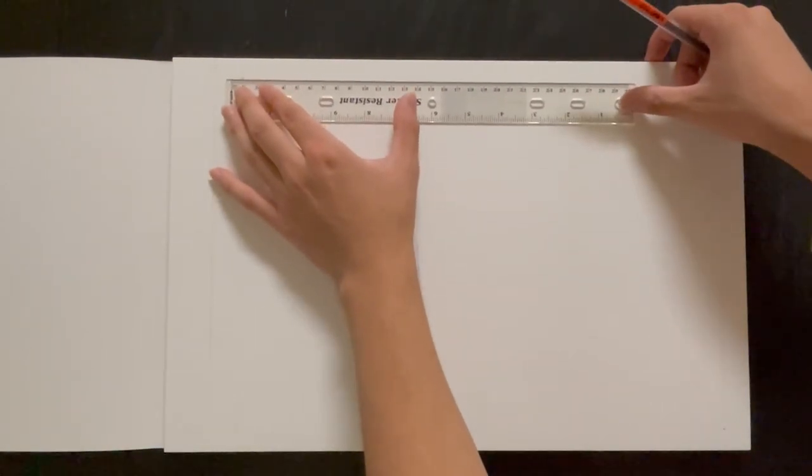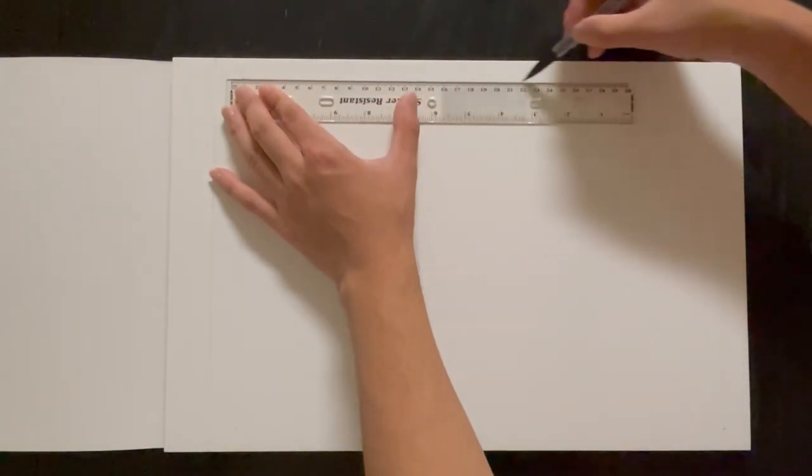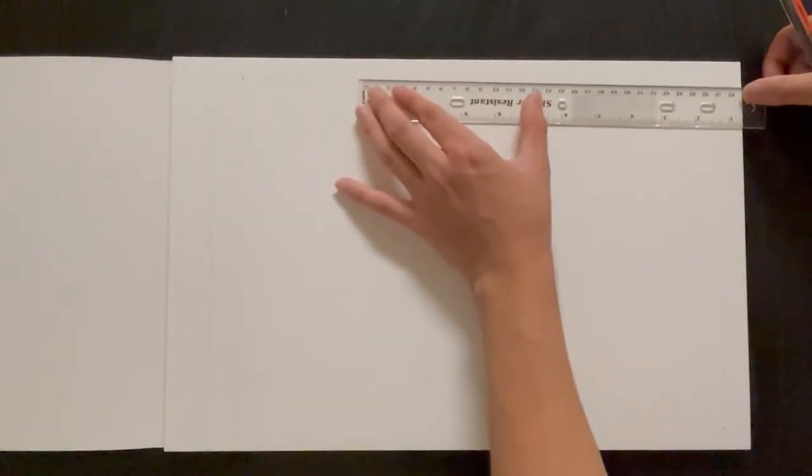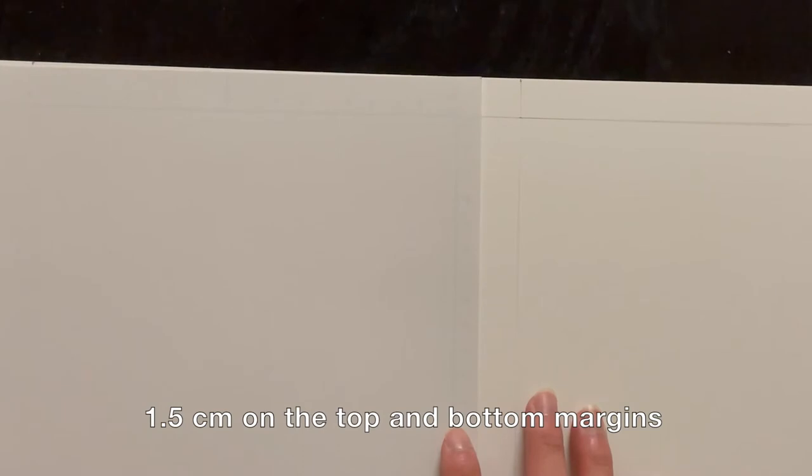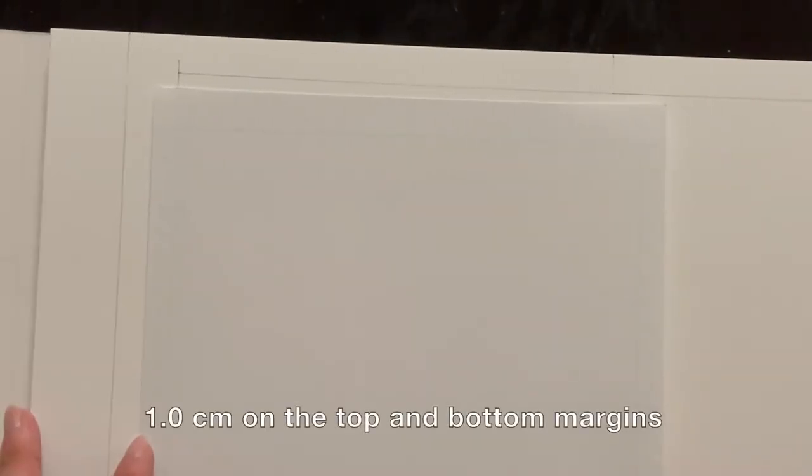After you have the dimensions of the whole page, you can measure out the cutoff marks. Since the dimensions are really similar, I'm going to overestimate the cutoff marks at one and a half centimeters on the top and bottom and one centimeter on each side again.